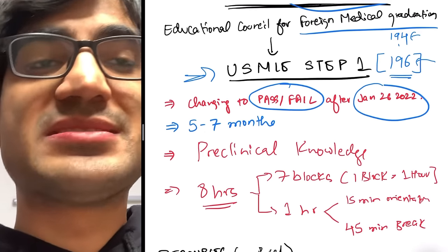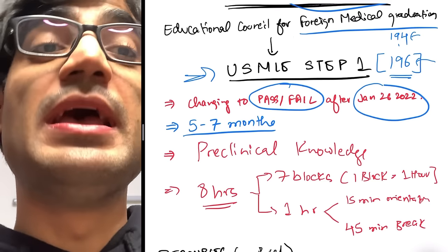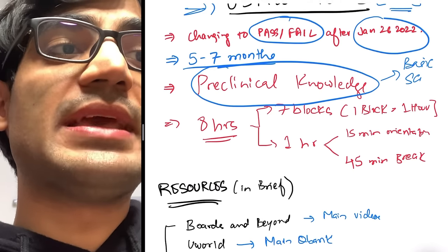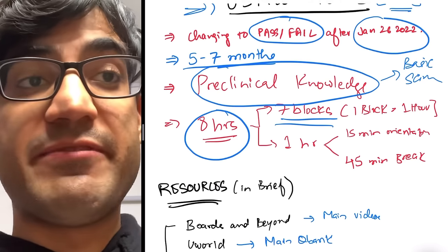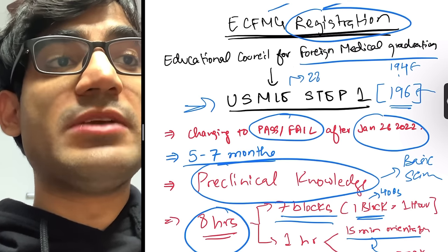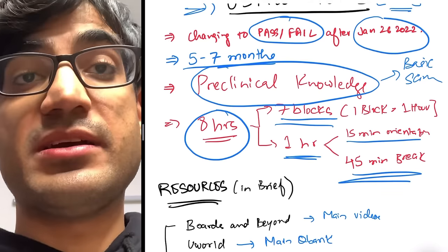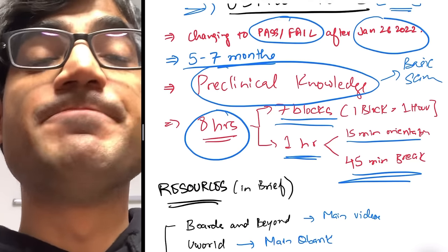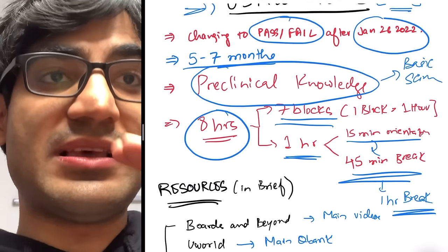You need about five to seven months to prepare for USMLE Step 1. The test mainly tests your pre-clinical knowledge — basic sciences from your first and second year of med school. The exam is about eight hours, divided into seven one-hour blocks with 40 questions each, totaling 280 questions. There's also a one-hour period split into a 15-minute orientation and 45-minute break. If you complete the orientation beforehand on the NBME website, you can convert it into extra break time.